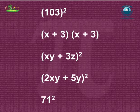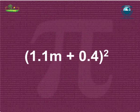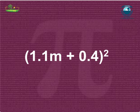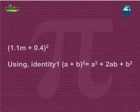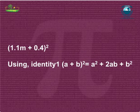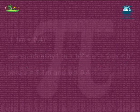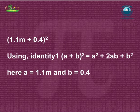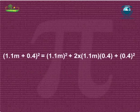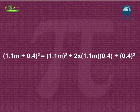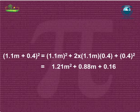Let's learn to apply this identity to expand or simplify an equation. To find the square of the binomial (1.1m + 0.4)², we apply identity 1: (a+b)² = a²+2ab+b². Here, a = 1.1m and b = 0.4. Putting the values in the identity, we get (1.1m+0.4)² = (1.1m)² + 2×1.1m×0.4 + (0.4)² = 1.21m² + 0.88m + 0.16. So, the identity method requires fewer steps than the direct method.